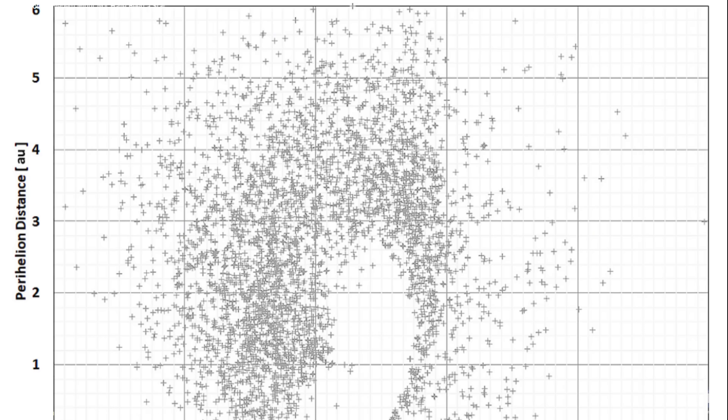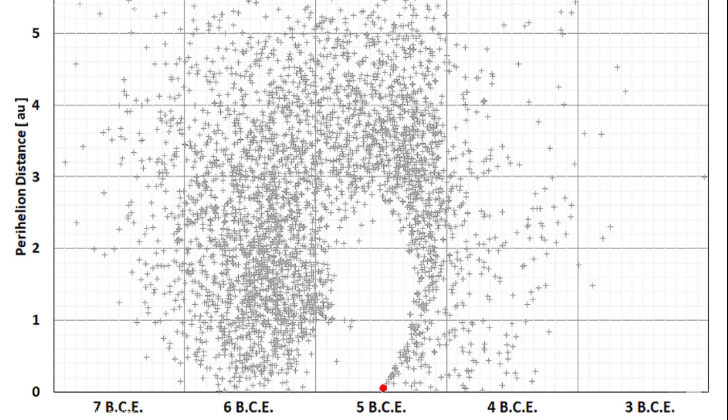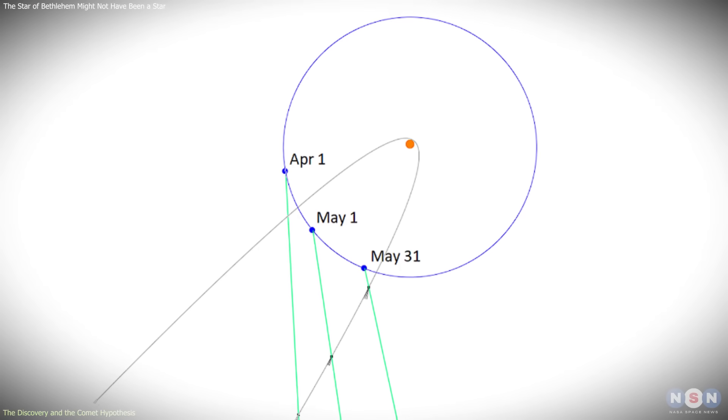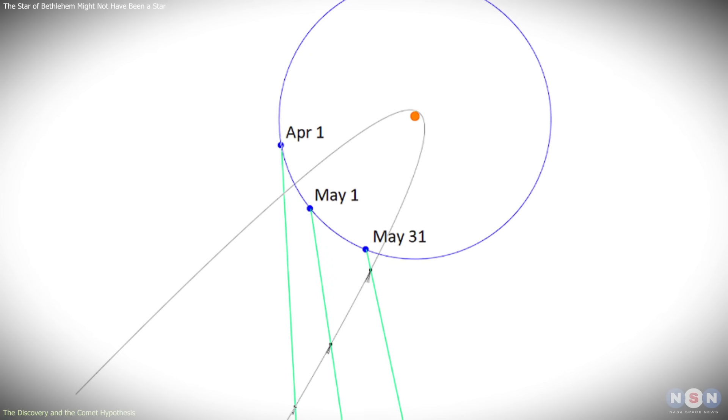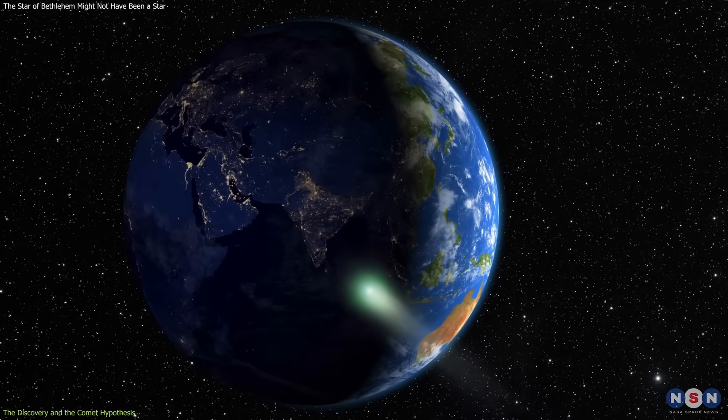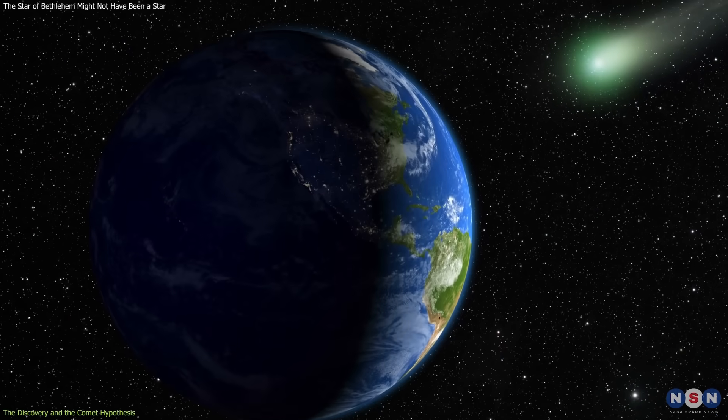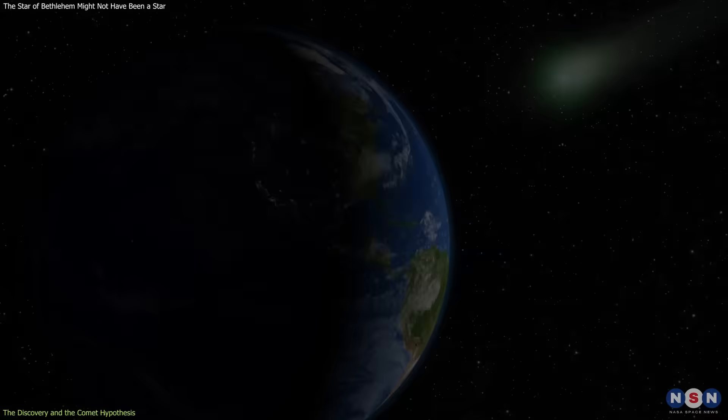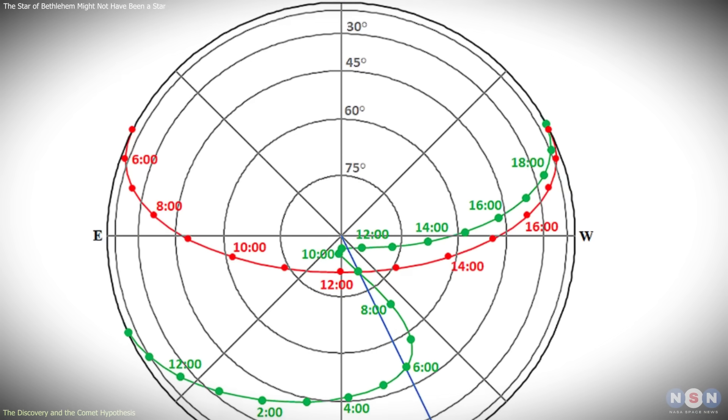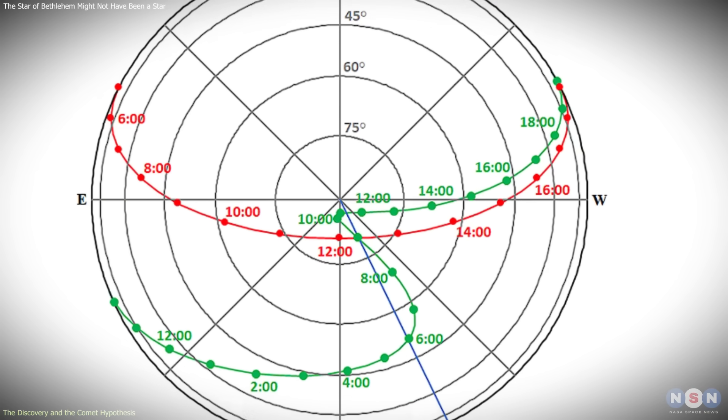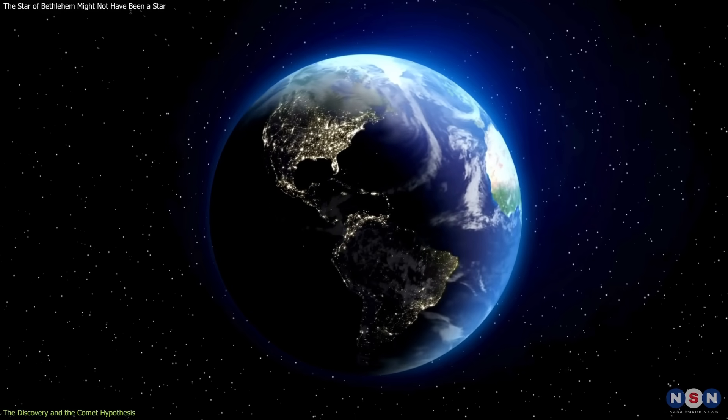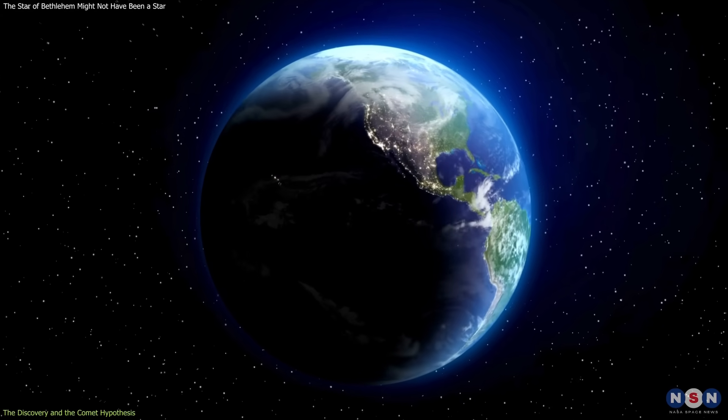Within those simulations, he identified a small subset of orbits in which the comet would have passed unusually close to Earth, potentially within the distance of the Moon. Under those conditions, the comet's apparent motion across the sky would behave in a way that feels counterintuitive to everyday experience. If the comet approached Earth from a specific direction and moved eastward at just the right speed, its motion could briefly counter Earth's westward rotation.